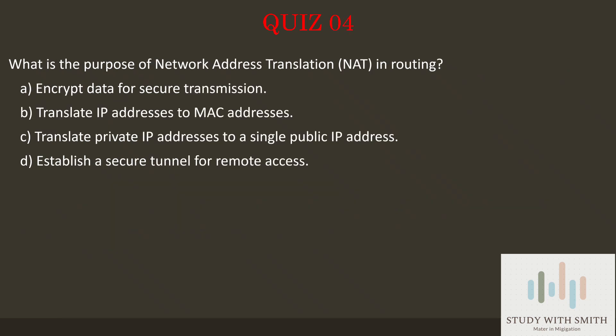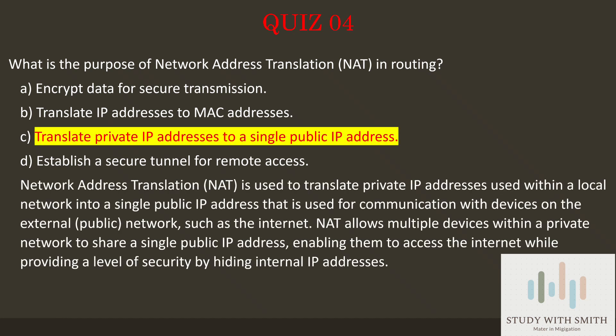Question 4: What is the purpose of network address translation (NAT) in routing? The answer is C: Translate private IP addresses to a single public IP address. NAT is used to translate private IP addresses used within a local network into a single public IP address for communication with devices on the external, public network, such as the Internet. NAT allows multiple devices within a private network to share a single public IP address, enabling Internet access while hiding internal IP addresses.